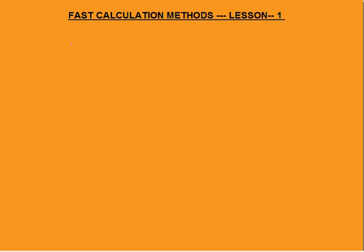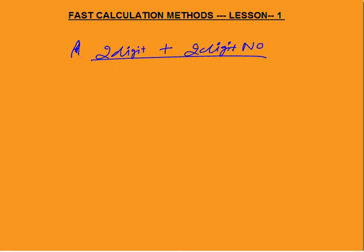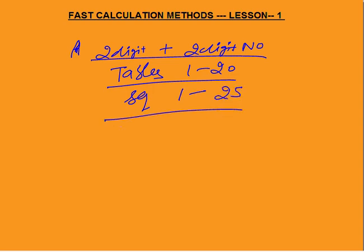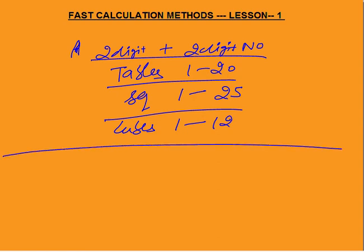That covers all the methods in fast calculation lesson 1. To briefly revise: before the next lesson, you must practice what was taught here — two-digit verbal addition of up to 4–5 numbers, tables from 1 to 20 both ways, squares from 1 to 25, and cubes from 1 to 12. This calculation will be important for the next lesson, which will cover more multiplication techniques. Thank you.